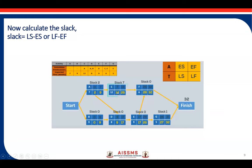Similarly, for activity C, 26 minus 19 or 14 minus 7 gives a slack of 7. For activity F, 32 minus 32 is 0, and 26 minus 26 is 0, so the slack is 0. In this way, we calculate the slack time for all activities in the network diagram.